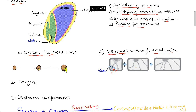Another external factor necessary for germination is the presence of oxygen. Oxygen is required for aerobic respiration, which provides energy for growth.